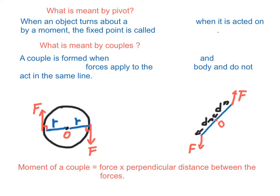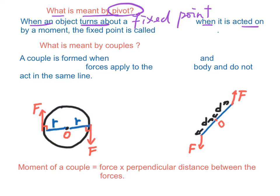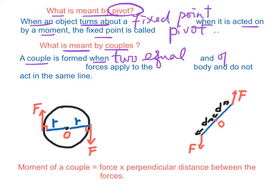What is the meaning of pivot? When an object turns about a fixed point, when it is acted on by a moment, the fixed point is called pivot. And what is meant by couple? A couple is formed when two equal and opposite parallel forces are applied to the same body and do not act in the same line.